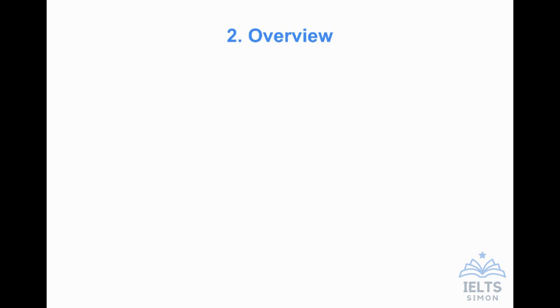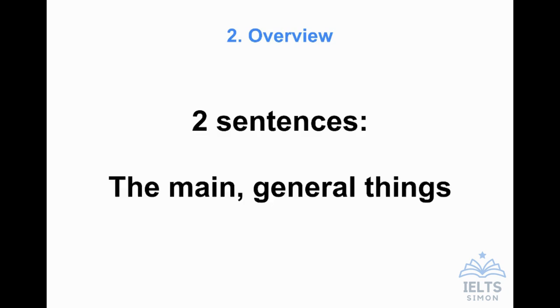The overview or summary. What do we do? Well, my advice is this is very important. So I give it two sentences. And in those two sentences, you're looking to explain or describe, sorry, the main general things. So look for two main things, two main points. You'll see what I mean in more detail when we actually do some questions later on this course.